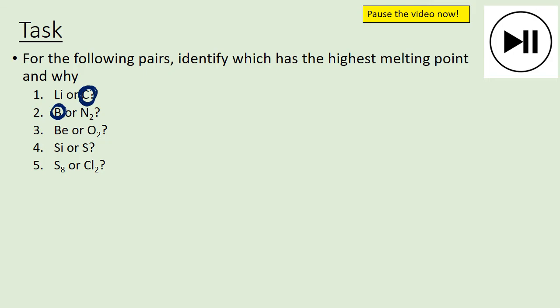Question three — Be or O₂. Looking at the periodic table, beryllium is a metal — it's a giant metallic structure with a fairly high melting point. Oxygen is a simple molecule held together by weak van der Waals. So the highest here is Be. Question four — Si or S. Silicon is a giant covalent structure with strong covalent bonds between all the atoms. Sulfur is a simple molecule with weak van der Waals forces. Therefore silicon has the highest melting point.